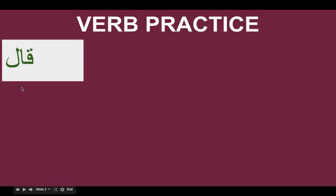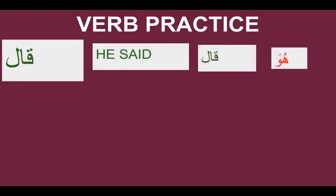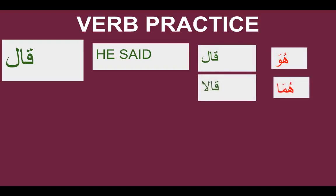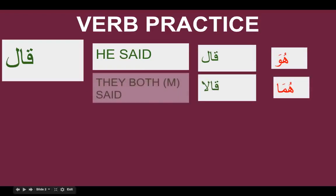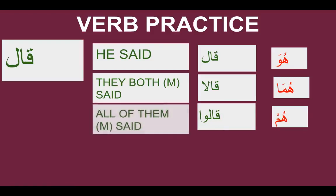Qala is a three-letter verb, but if you see here it has an alif — it is a madd, so it is a different type of verb. We will be conjugating this, but not to the complete extent. Qala means 'he said.' For the dual masculine, huma qala; we add the alif musanna. They both males said — huma qaloo; the waw represents hum and alif is the spelling rule — all of them said.